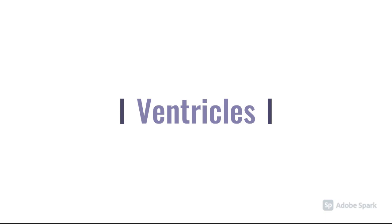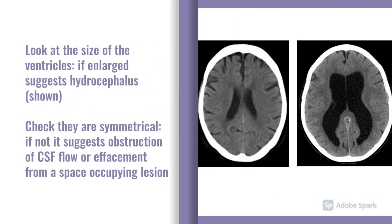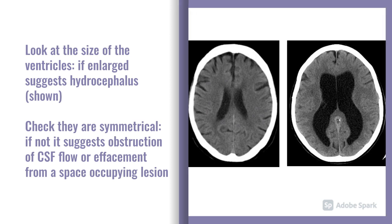Moving on to talk about the ventricles, it's important to check for both size and symmetry. In the example on the right, you have enlarged ventricles, which would be suggestive of hydrocephalus. Whereas if you had one large ventricle and one normal ventricle, that would suggest some sort of obstruction to CSF flow.